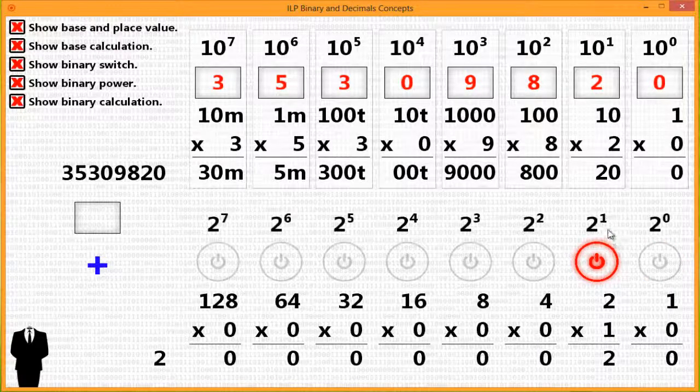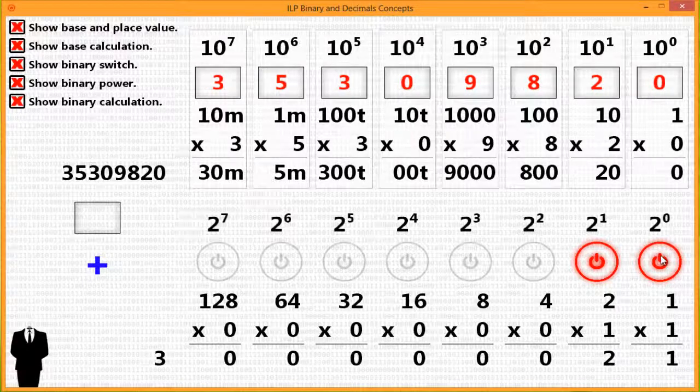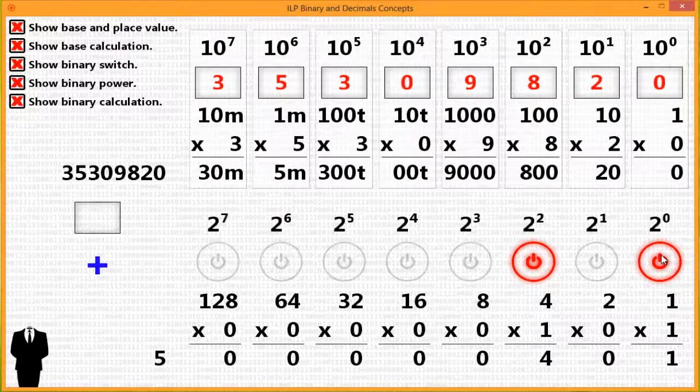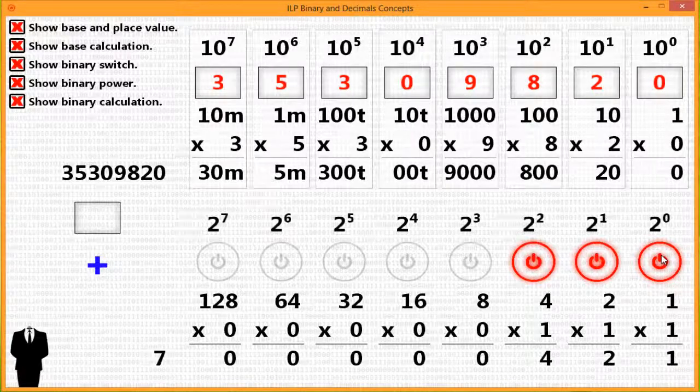Then to have 3, you make sure that the 2 to the 1st power and 2 to the 0 power are both on. 3. And then to have 4, and then 5, 6. Let me correct that. 6 would be 4 and 2.